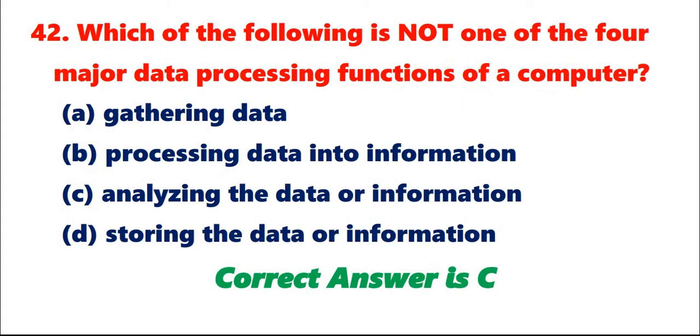Question 42: Which of the following is not one of the four major data processing functions of a computer? A. Gathering data. B. Processing data into information. C. Analyzing the data or information. D. Storing the data or information. Correct answer is C.